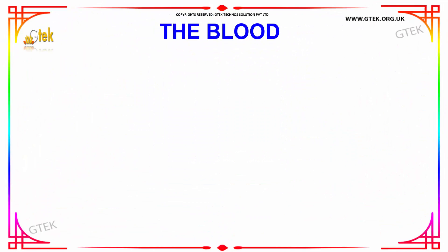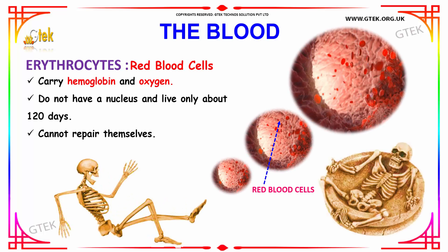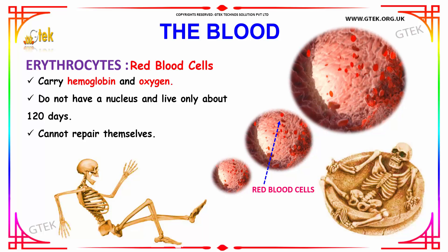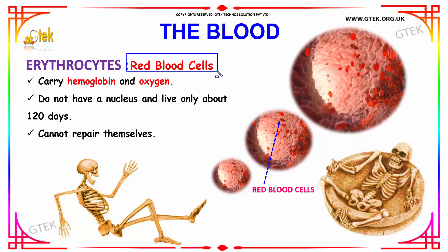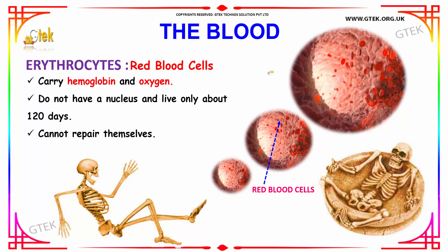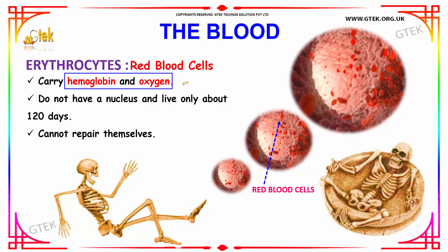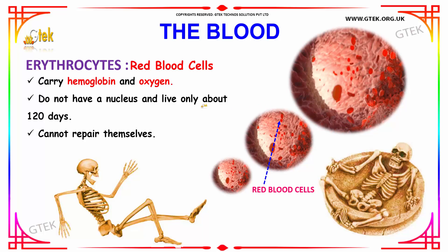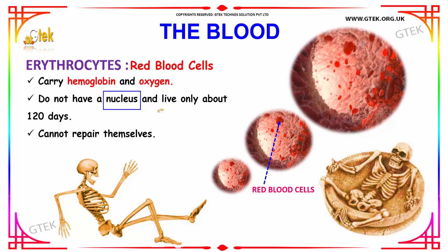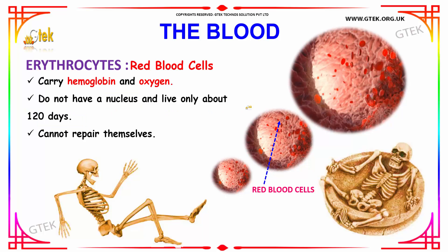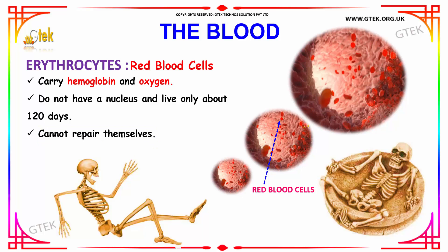Blood is composed of elements such as erythrocytes, thrombocytes, leukocytes, and plasma. Erythrocytes are the red blood cells, abbreviated as RBC. Red blood cells carry hemoglobin and oxygen to various parts of the body. They do not have a nucleus, they live only about 120 days, and they cannot repair themselves.